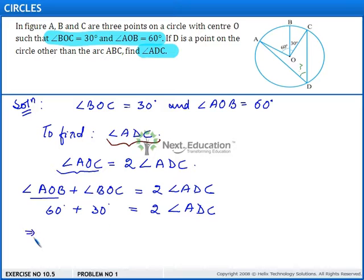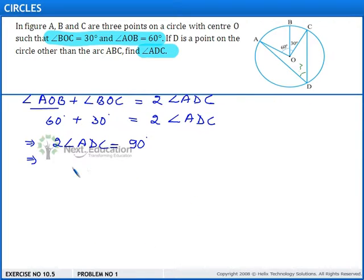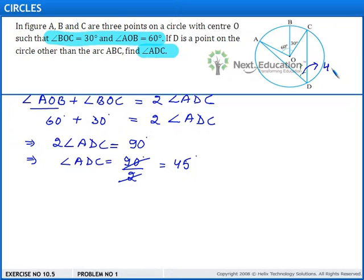This implies that 2 times angle ADC is equal to 90 degrees, which implies that angle ADC is equal to 90 degrees divided by 2, which is equal to 45 degrees. Therefore, the measure of this angle is equal to 45 degrees.